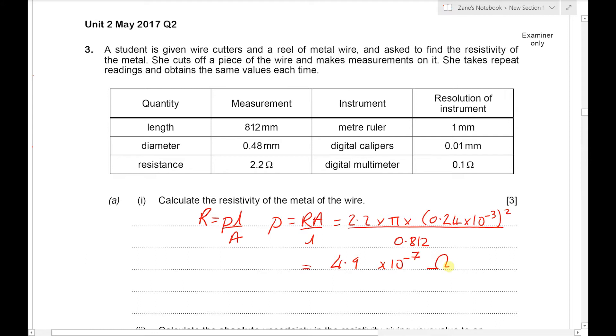The unit for resistivity is ohm meters and there's a very strong chance that it could be a unit mark. Now you've got to consider significant figures because this is a question about uncertainties. We can't go too mad with figures. The best answer is two significant figures because we have the resistance and the diameter to two significant figures.